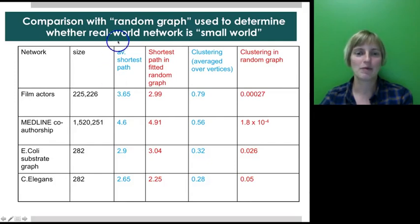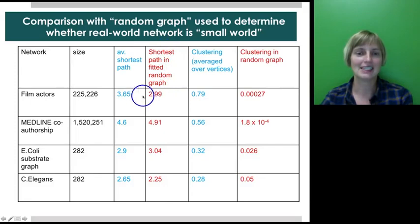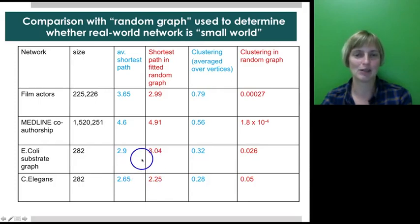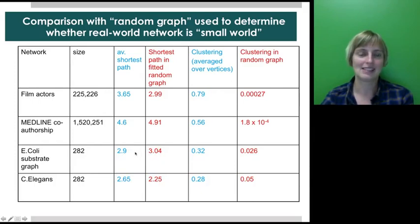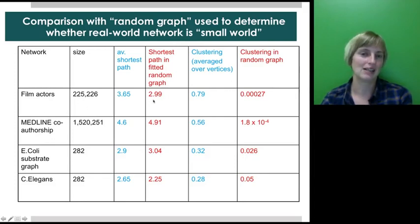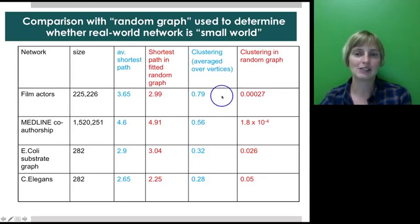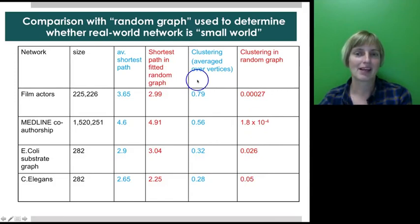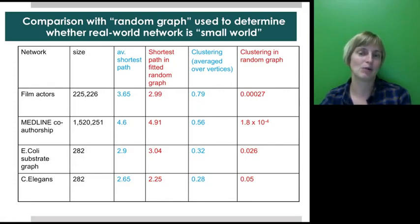This is the actual shortest path, and this is the shortest path in the equivalent random graph. You can see that these values are quite close, if not in some cases even a bit lower. So it's not the case that because these networks have more structure their average shortest path is significantly longer than it is for an equivalent Erdős–Rényi random graph. And looking at clustering, the value for the equivalent random graph is rather small, while the actual observed clustering is much, much higher. These are all highly clustered networks that have the small world property.